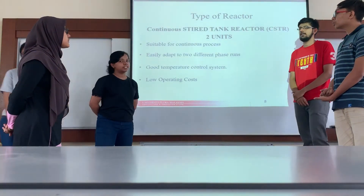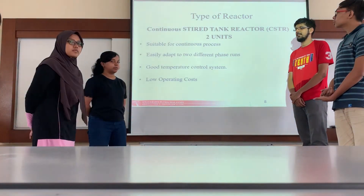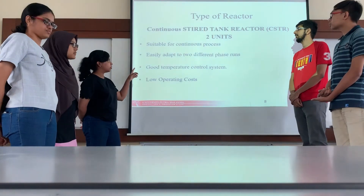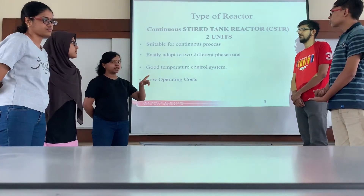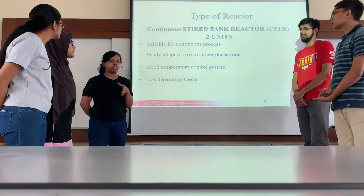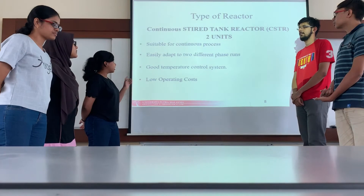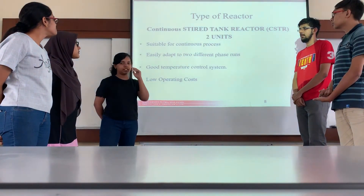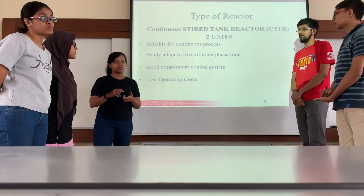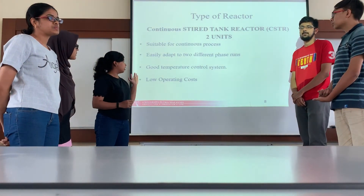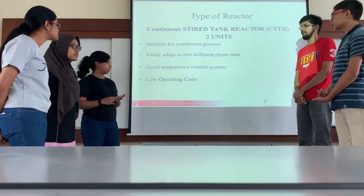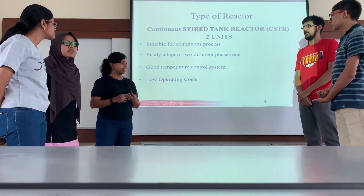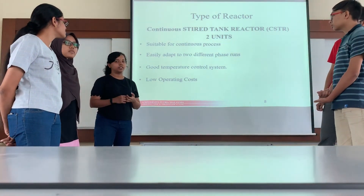For this process, we chose CSTR as our reactor. There are 4 reasons for it. First, it is suitable for a continuous process since this ethylbenzene production is a continuous process. Secondly, it is easily adapted to different phase transitions when the benzene will be in liquid form and also in steam form. It has a very good temperature control system, and finally, it benefits us economically since it is a low operating cost equipment.